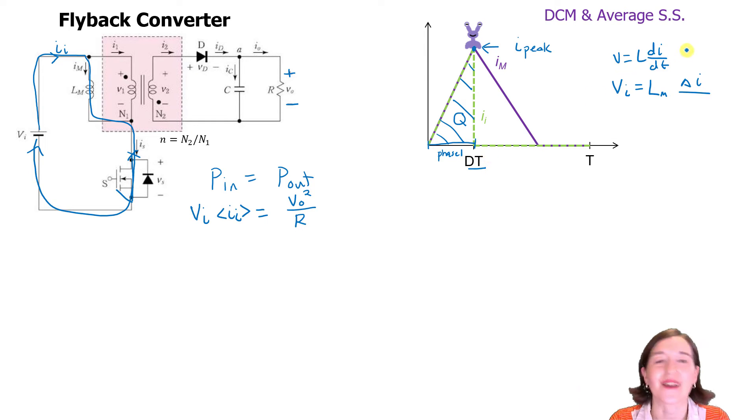And so that dt is going to be this time here. Yeah, dt as in little dt, also big D, capital T. So let's put that here. Okay, and we can replace this delta I as I peak. So I peak is going to be equal to input voltage times D times T divided by LM. Not too bad.